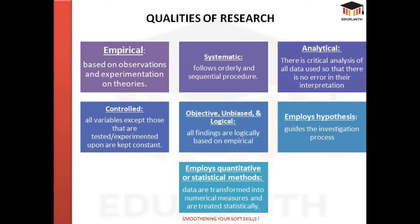Now let's talk about the qualities of research. Research is empirical — it is based on observations and experimentation. It is systematic — it follows an orderly and sequential procedure. It is analytical — it gives critical analysis of all data used so there is no error in interpretation. Research is controlled — all variables except those being tested or experimented upon are kept constant.